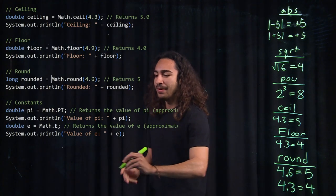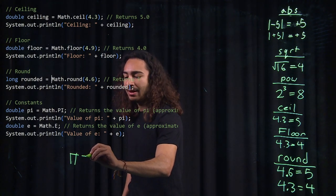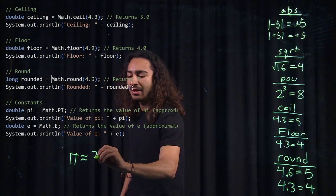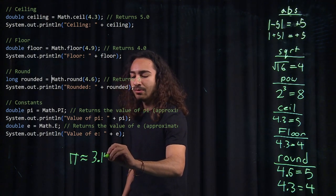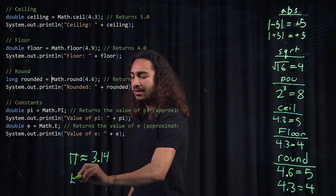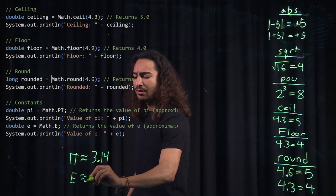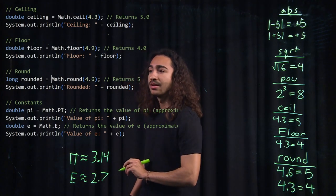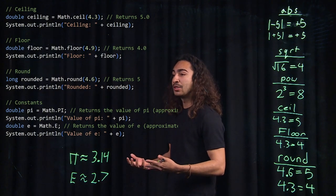So for the pi value, Math.pi would just give us a decimal value that's approximated to 3.14. And E, if I remember correctly, will be close to 2.7.